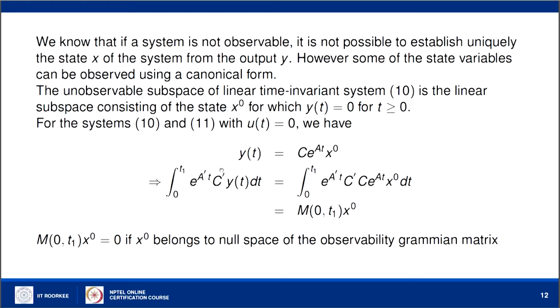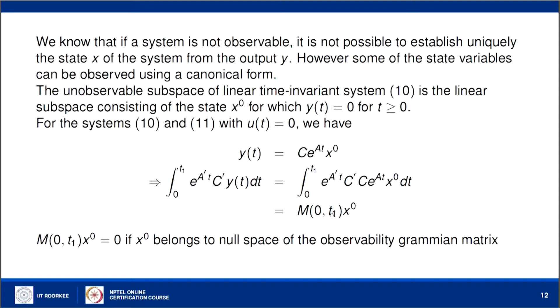Multiplying both sides by e^(A^T·t)·C^T and integrating from 0 to t1, we get an expression of the form M(0,t1)·x0, where M(0,t1) is the observability Gramian matrix. If x0 is in the null space of M(0,t1) — since the system is not observable, M is not invertible and its null space has nonzero dimension — then M·x0 = 0. The null space of M corresponds to the unobservable states, and the range of M corresponds to the observable states.